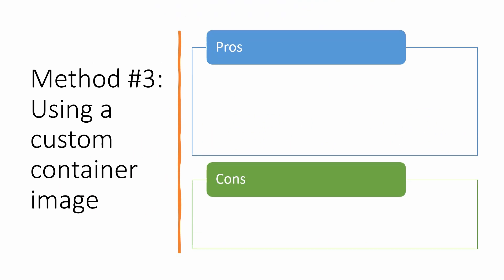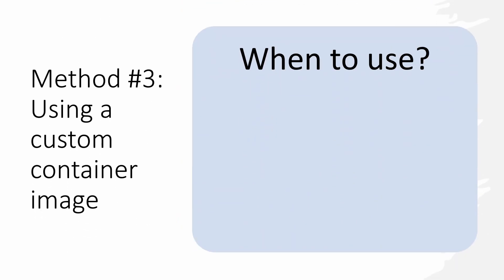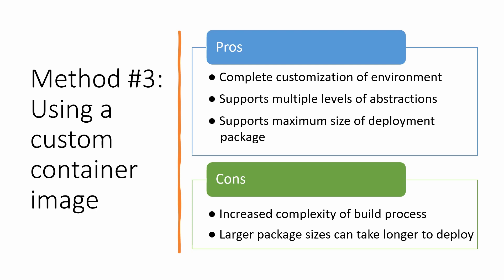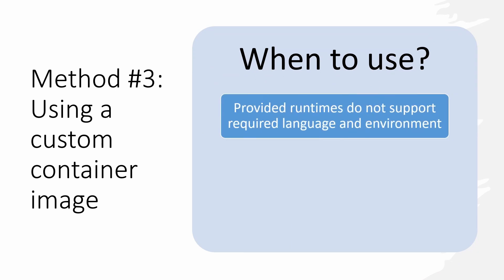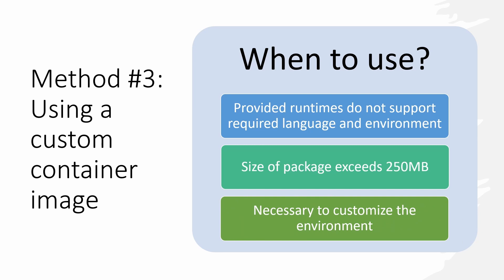The advantages of the container image method: it provides maximum flexibility for customization of the function's environment and allows choosing from multiple levels of abstraction — building your own image, building runtime and handler, or building only the handler. It also allows using the maximum deployment package size, with the maximum supported uncompressed image size up to 10 gigabytes. The disadvantages are increased complexity of the build process due to containerization tools, and larger package sizes that take longer to deploy, though this can be mitigated by using image layers. This method is appropriate when provided runtimes do not support your required language version, when dependencies exceed 250 megabytes, or when you need to customize the function's environment.